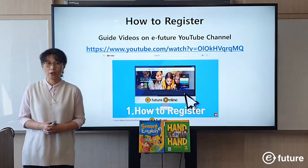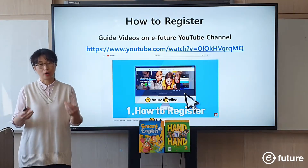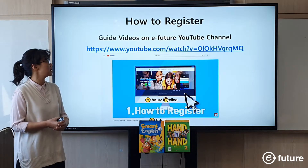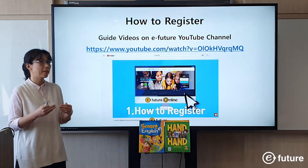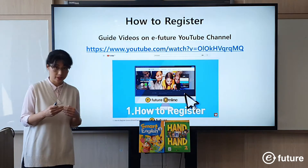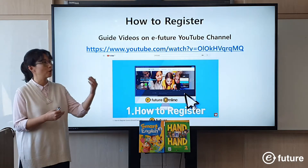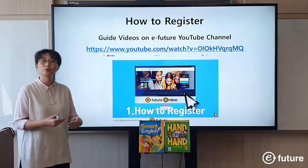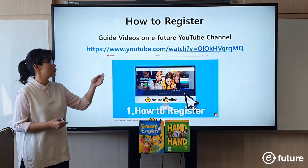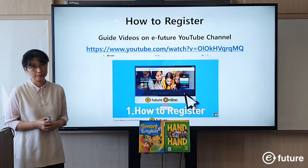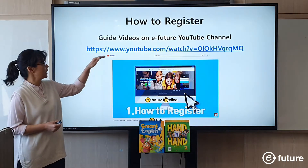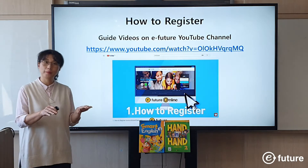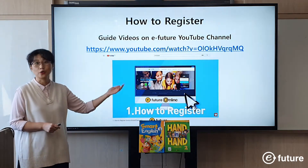How to register? You need to register in order to use the e-books. We made step-by-step guide videos, so you can watch the videos and register. It's very easy to follow and you can find the videos on the eFuture YouTube channel. Go to YouTube and search eFuture, then you can find all these videos.